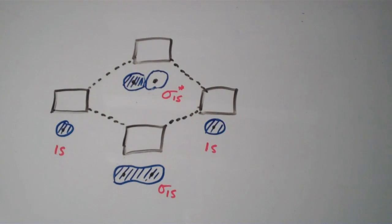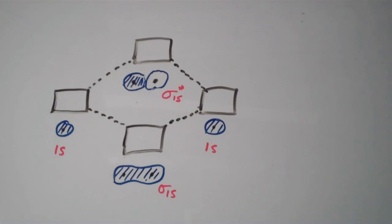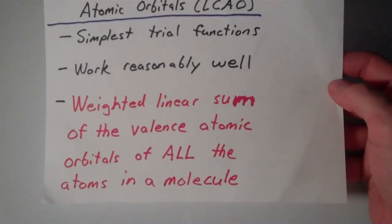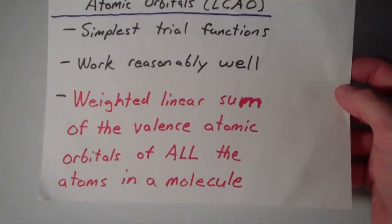In this video I'm going to continue talking more about molecular orbital theory. In molecular orbital theory, you set up what's called a trial function, and the trial function is an educated guess as to what the solution of the Schrödinger equation might be for the entire molecule, because it's impossible to solve the Schrödinger equation for even some of the simplest molecules. The simplest trial functions that we use are called linear combinations of atomic orbitals, and these are weighted linear sums of the valence atomic orbitals of all of the atoms in a molecule.